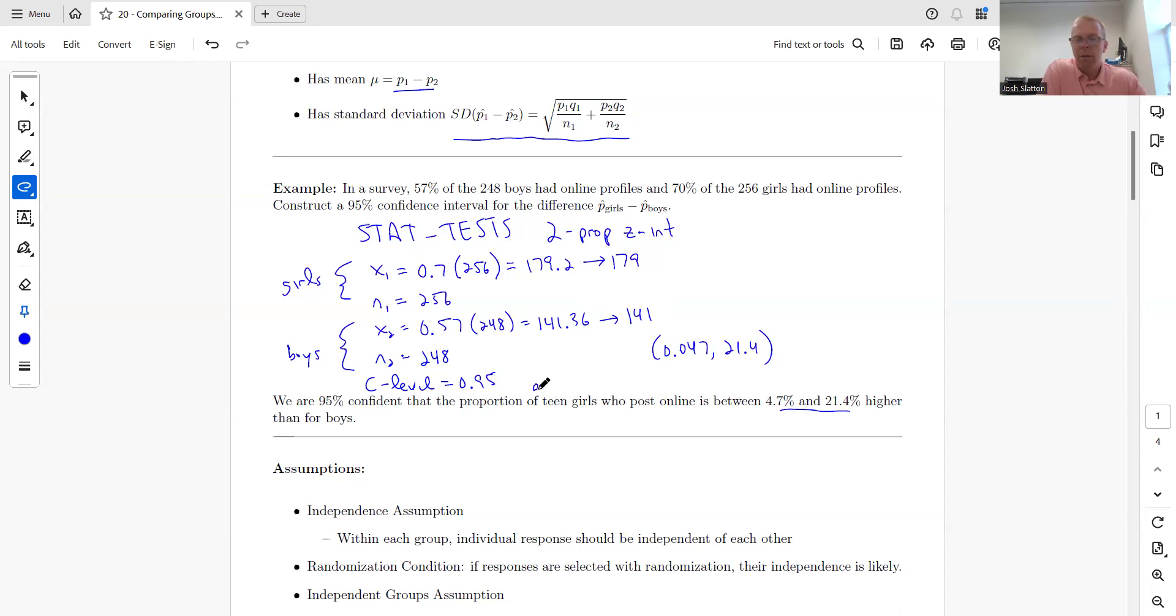Then we have the interpretation: We are 95% confident that the proportion of all teen girls who post online is between 4.7% and 21.4% higher than for all boys.